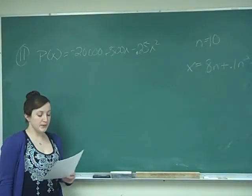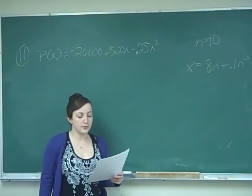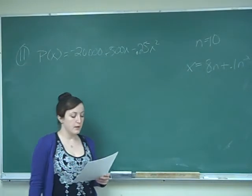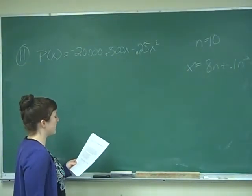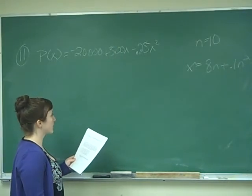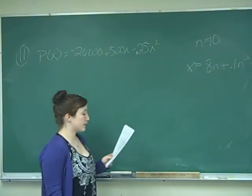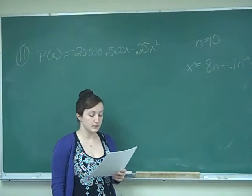This is problem number 11 and it says the profit from a new computer is modeled by the function p of x equals negative 20,000 plus 500x minus 0.25x squared dollars, where x is the number of computers sold per year in thousands.